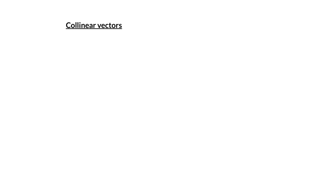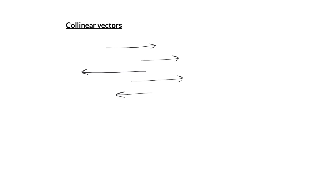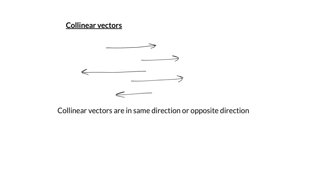The next term is collinear vectors. Collinear vectors are vectors which are in the same direction or in opposite directions. These are further classified into two types: parallel vectors (also called like vectors) and anti-parallel vectors (also called unlike vectors).